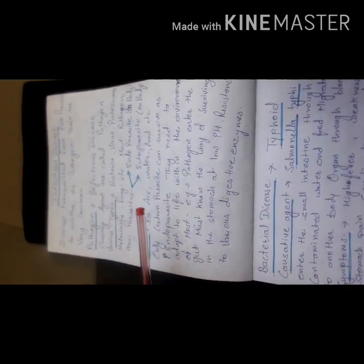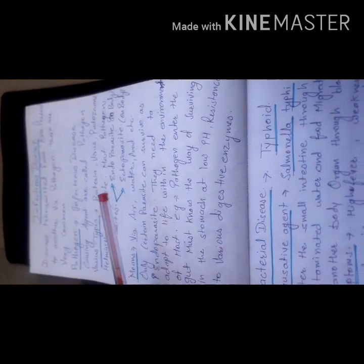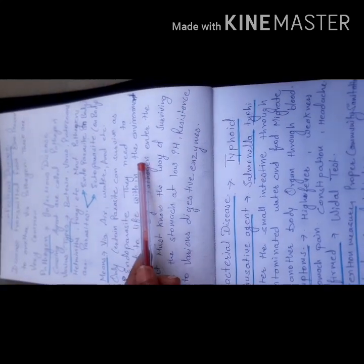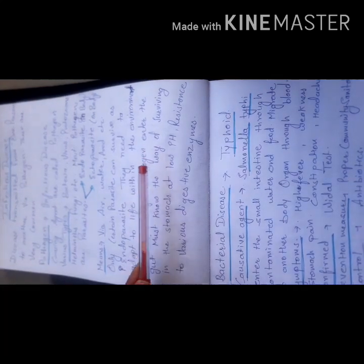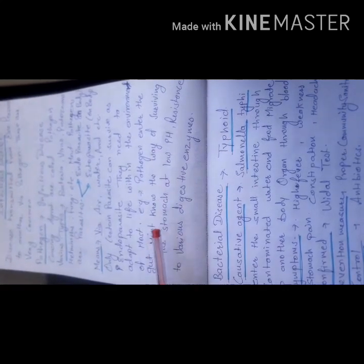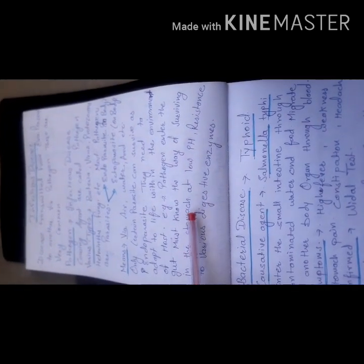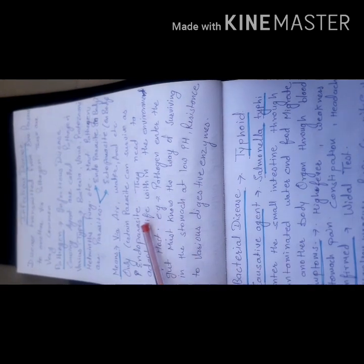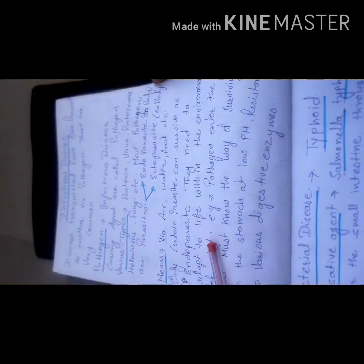Mostly the pathogens are ectoparasites because when they are endoparasites they need to adapt to life within the environment of the body of the host. For example, the pathogen enters the gut. It must know the way of surviving in the stomach at low pH, and have resistance to the various enzymes that are present in the stomach. That's why endoparasites need to adapt to life within the environment of the host.